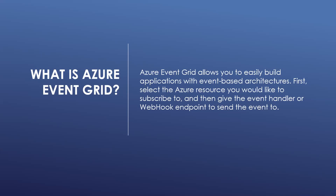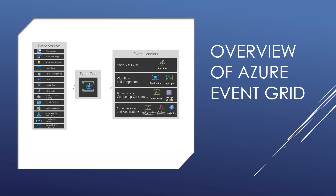Azure Event Grid allows you to easily build applications with event-based architectures. Select the Azure resource you would like to subscribe to and then give the event handler or webhook endpoint to send the event to. In the diagram, you can see an overview of Azure Event Grid. Event Sources — the following Azure services support sending events to Event Grid: Azure App Configuration, Blob Storage, Container Registry, Event Hubs, IoT Hub, Key Vault, Machine Learning, Maps, Media Services, Resource Groups, Service Bus, Queue Storage, Webhooks, SignalR, and Subscriptions.